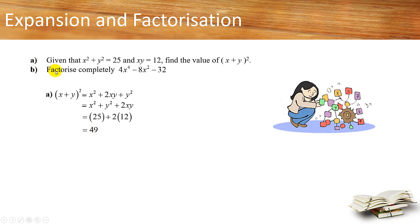For part B, we need to factorize completely 4x⁴ - 8x² - 32. First of all, can you notice a common factor among the three terms? The answer is 4. So let's take out a 4, and you'll be left with x⁴ - 2x² - 8.